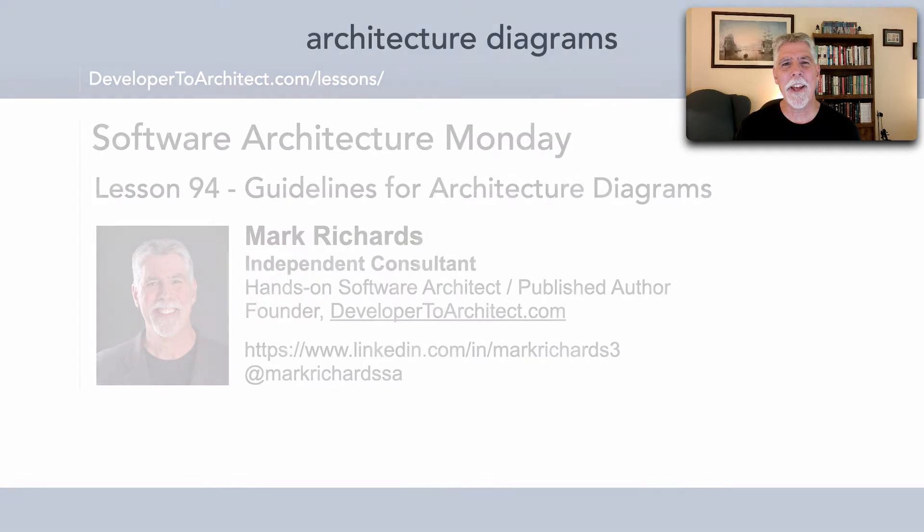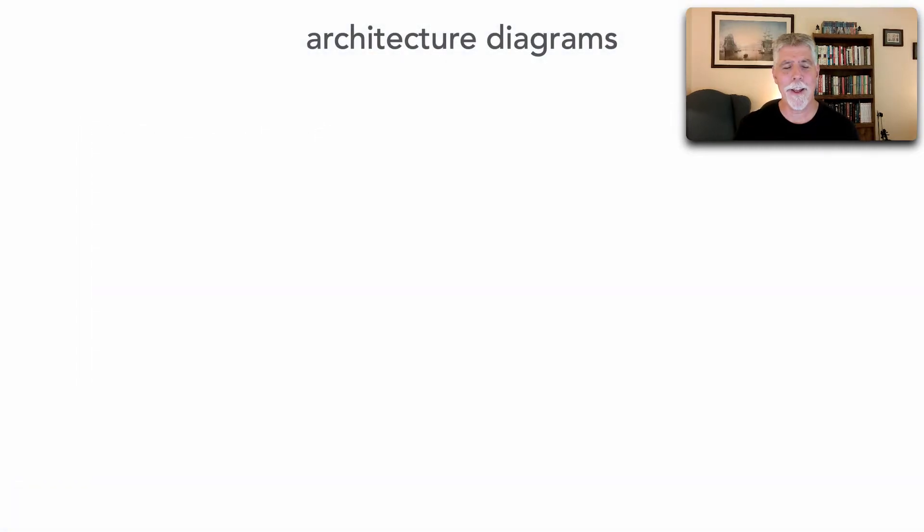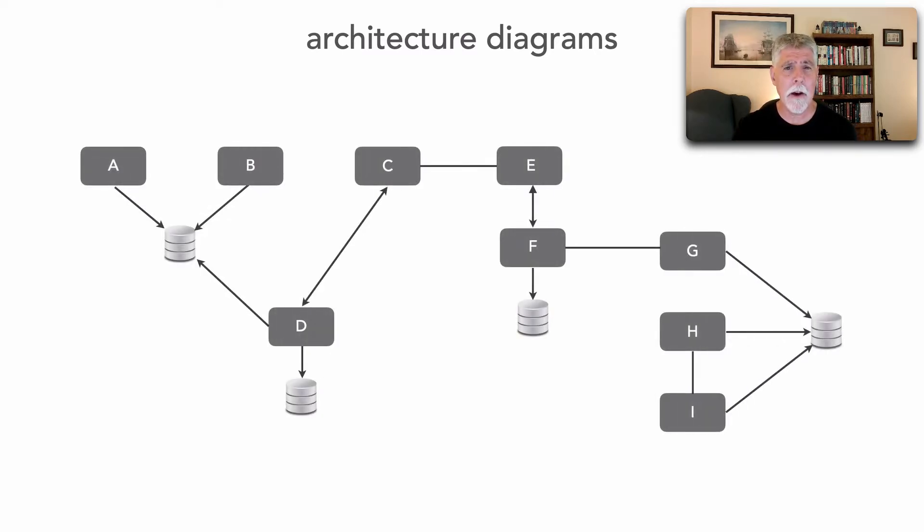You see, I was virtually at a client site and had to understand a particular architecture diagram, and this was the diagram that was presented to me. Now here I have hidden the actual context with gray boxes with the letters A through I, but this in essence was the diagram.